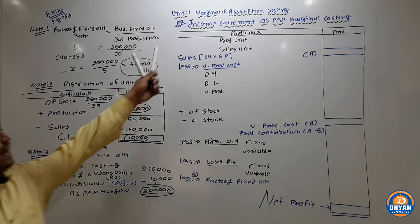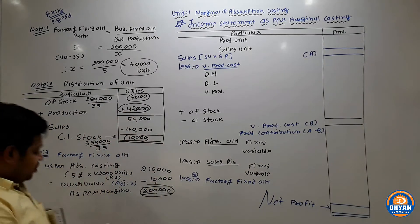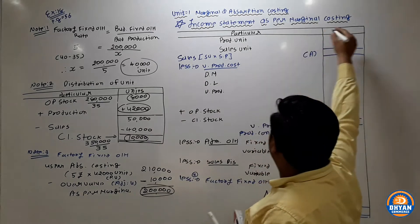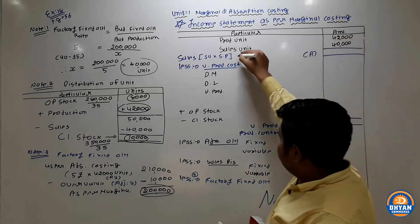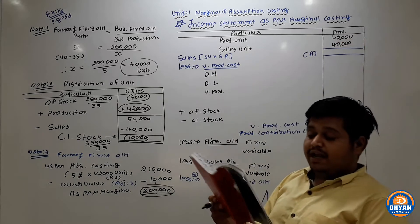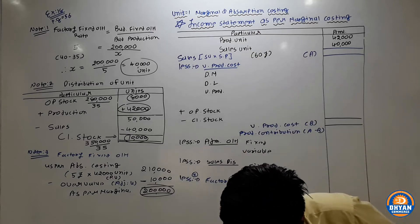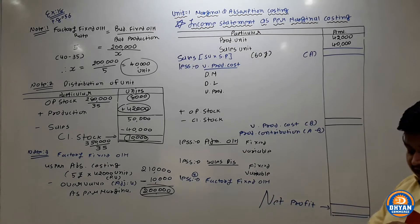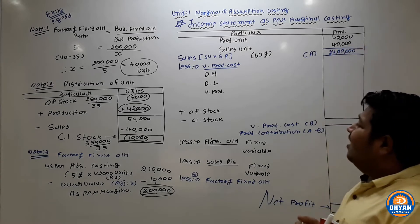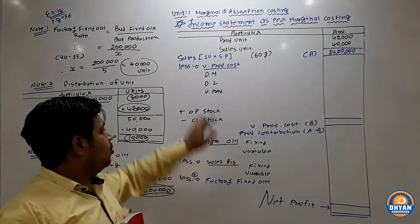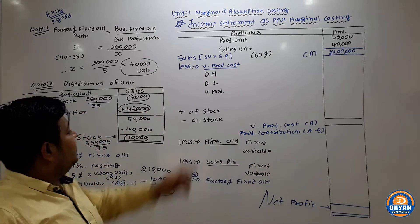Now we prepare our first income statement — as per Marginal Costing. Production unit is 42,000 and sales unit is 40,000. In marginal costing, only variable production cost is used. The ratio of direct material : direct labor : variable overhead is 3:2:2, and the variable production cost per unit is Rs. 35.